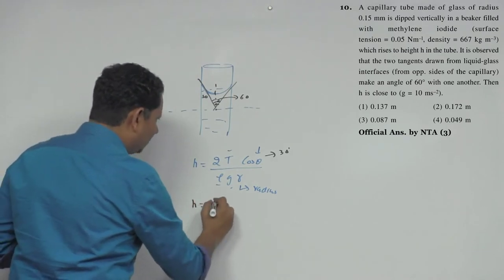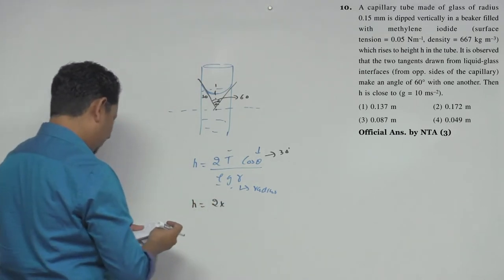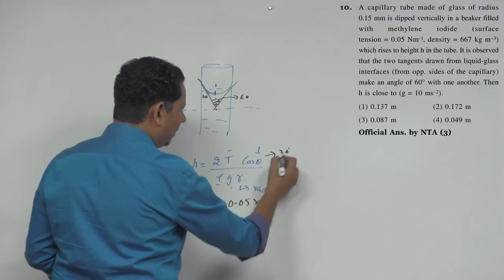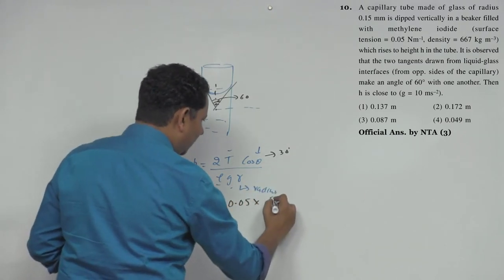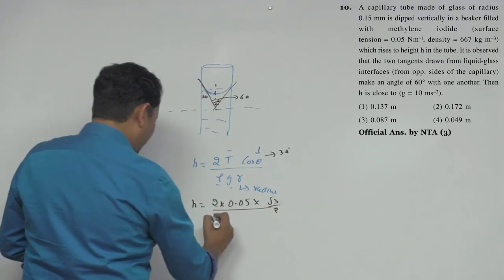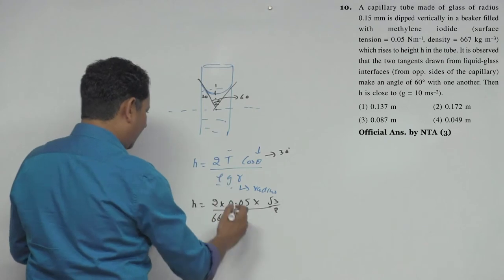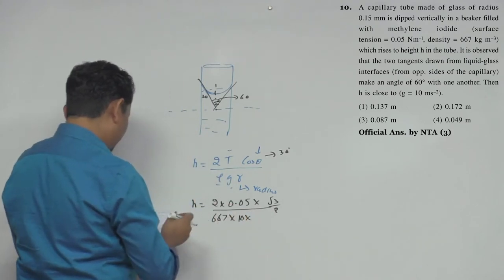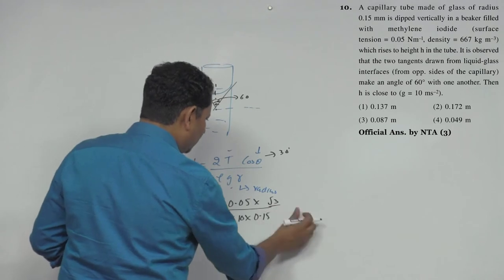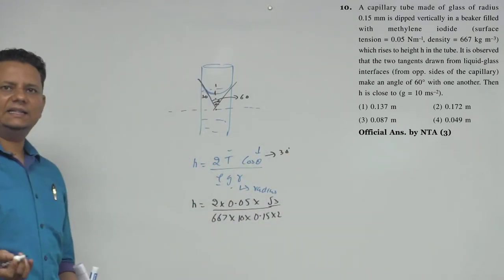So H = 2 × T × cosθ / (ρ × g × r). Surface tension T = 0.05 N/m, cos30° = √3/2, density ρ = 667 kg/m³, g = 10, and radius r = 0.15 mm. Now we multiply and solve to get the answer.